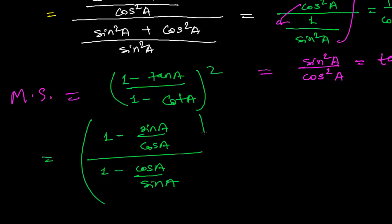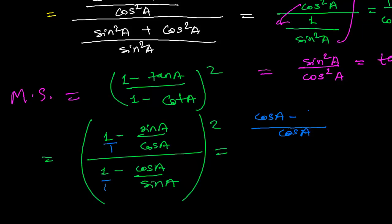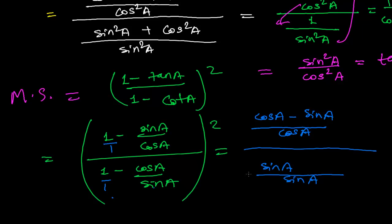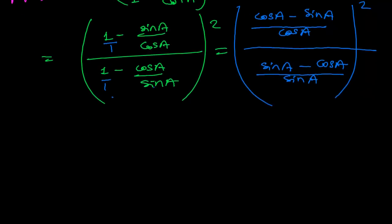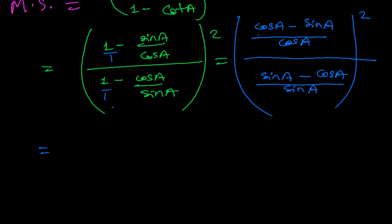Again, we need to deal with these as fractions everywhere. The LCM of 1 and cos a is cos a, so we get cos a minus sin a, all over cos a. For the denominator, the LCM of 1 and sin a is sin a, so 1 times sin a gives sin a, and sin a divided by sin a gives 1 times cos a, giving sin a minus cos a over sin a. Then whole square.